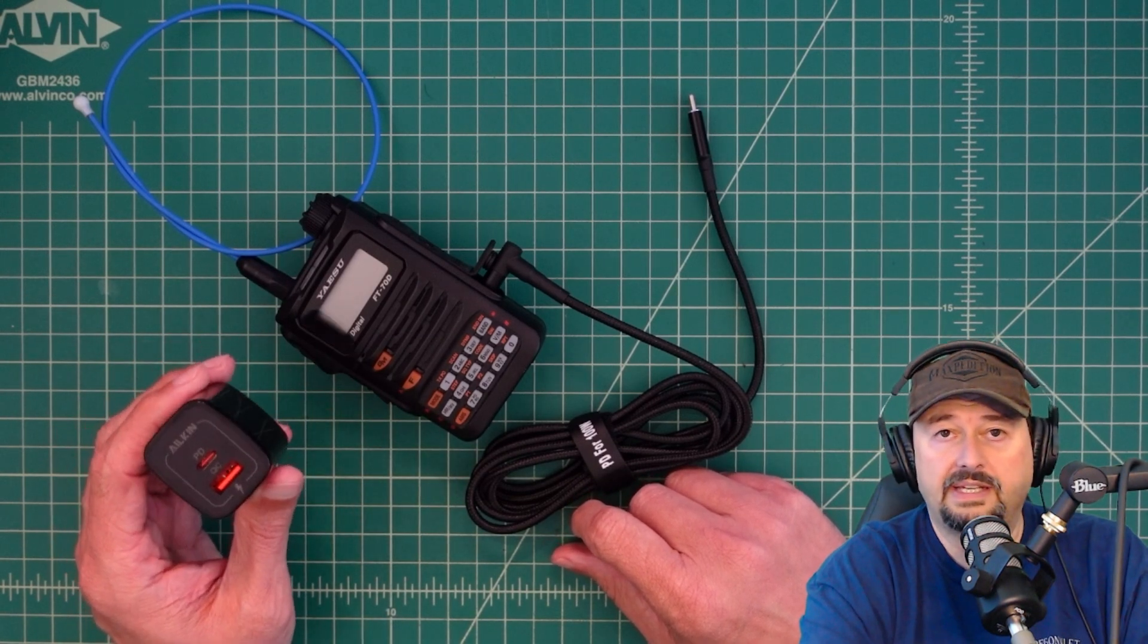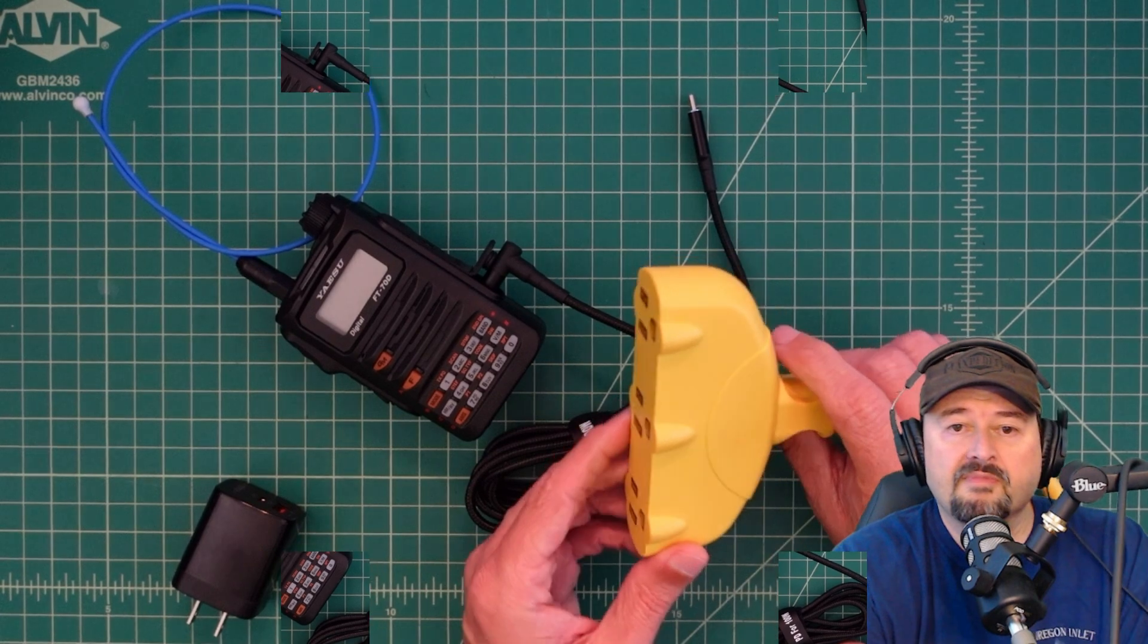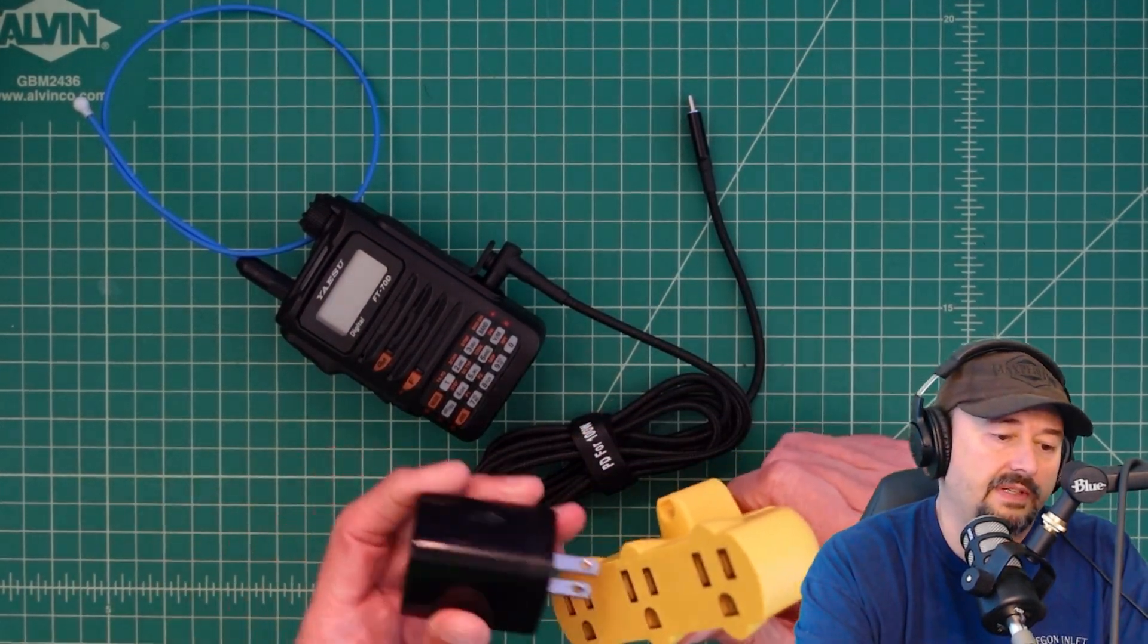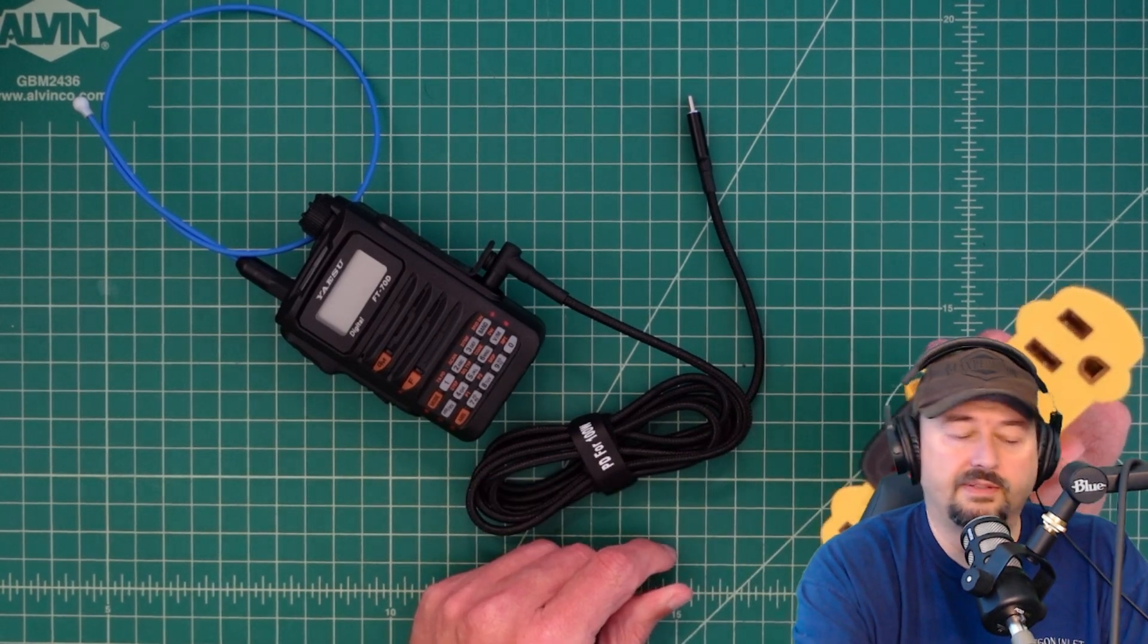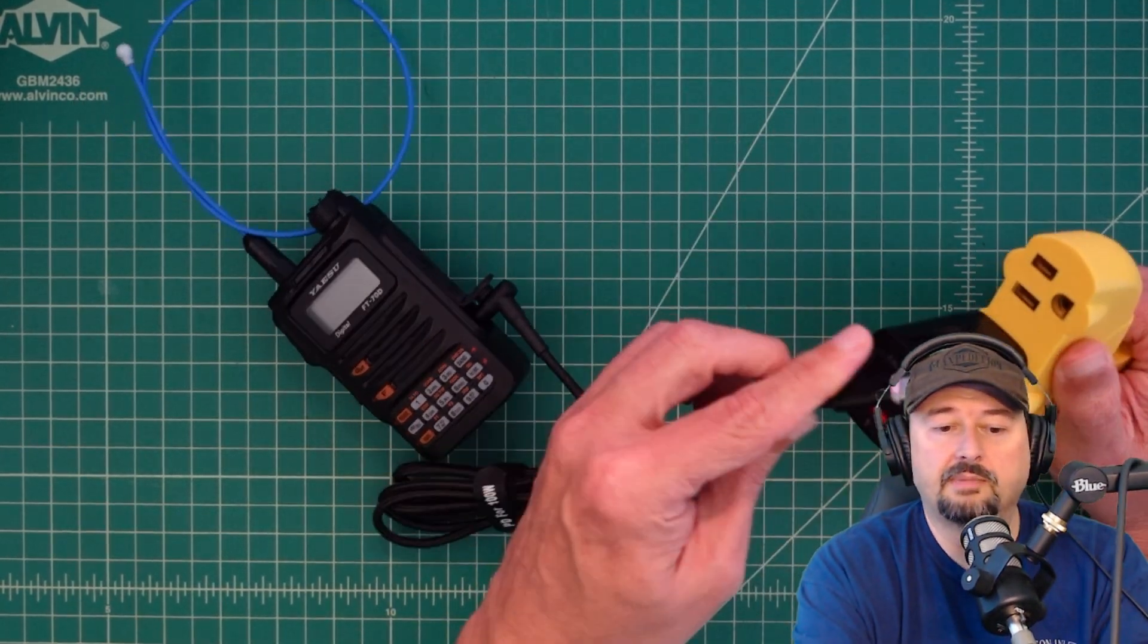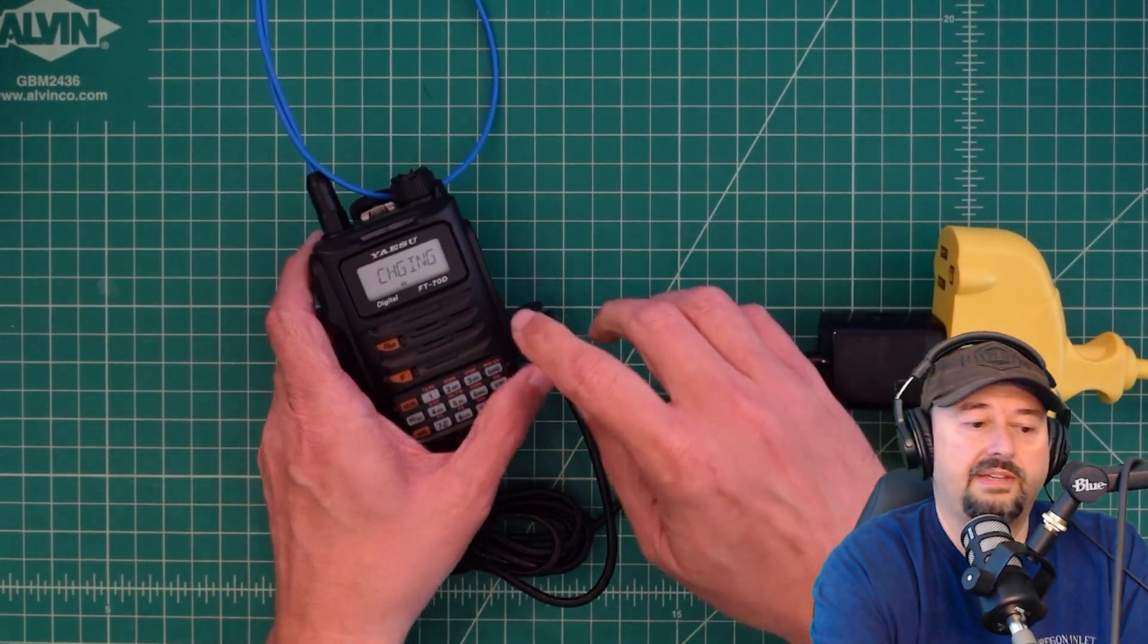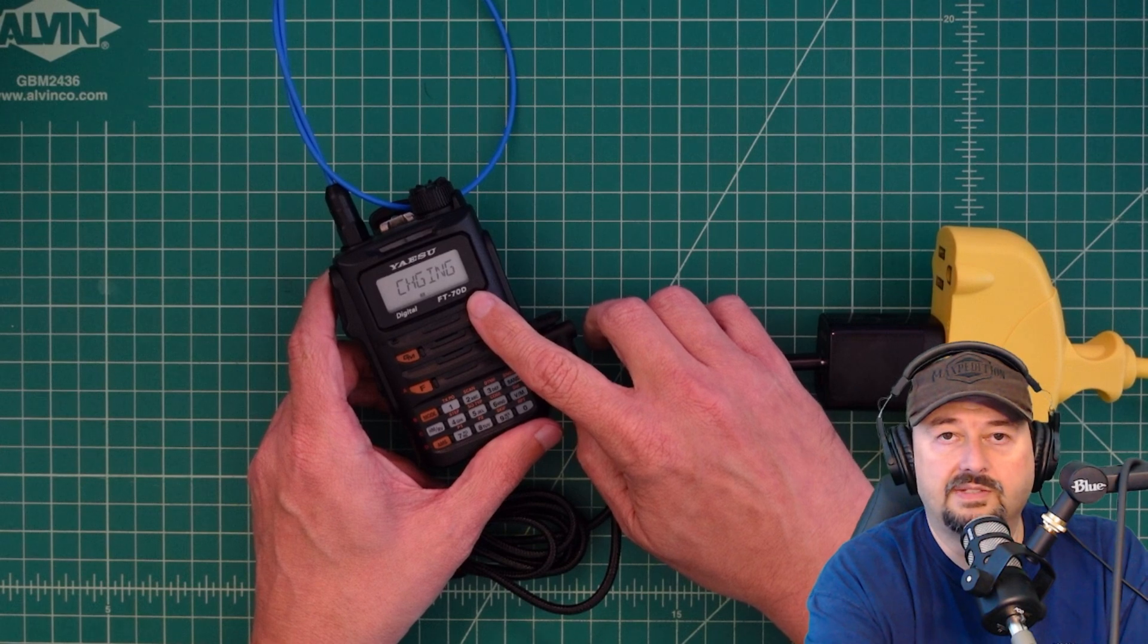So let me get it plugged in and we'll see what we're talking about. All right so here we have the end of an extension cable. So let me just go ahead and plug this block in. Very simple to do. And then I'm just going to go ahead and plug this into the PD port on here. And then you can see that my Yaesu is charging.